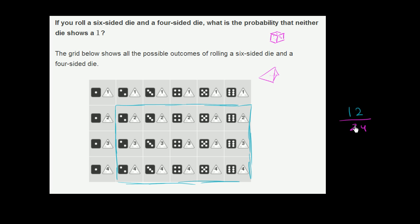So the probability is 12 out of 24. You could write it as 12/24, but dividing numerator and denominator by 12 gives the equivalent fraction 1/2. The probability that neither die shows a 1 is 1/2.